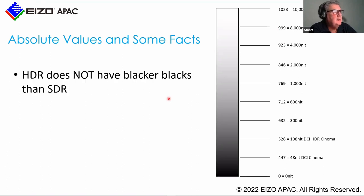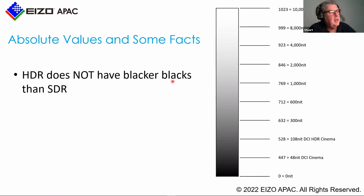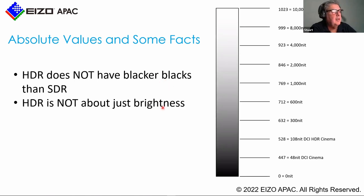The PQ HDR is an absolute reference system to 10,000 nits. But HDR does not mean better blacks compared to SDR — this is a common misunderstanding. When I calibrate the CG3146 in SDR, the black level is exactly the same as in HDR. It depends on the display capabilities. The EOTF will change things like shadow detail, but the actual black in SDR and HDR is the same. It's not just about brightness — you can get high-brightness monitors that aren't HDR. It's about the total dynamic range from black to peak white.